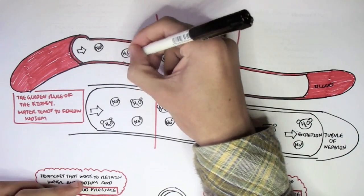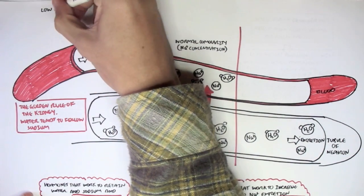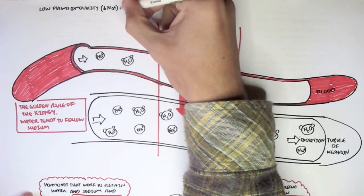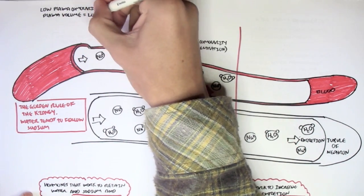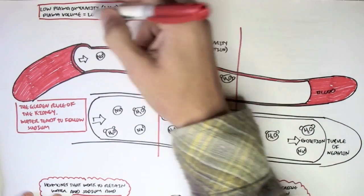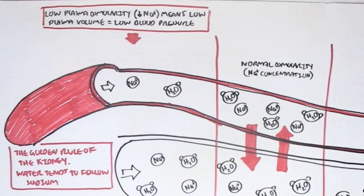However, what would happen when we have low osmolarity—low plasma osmolarity—when we have low sodium concentrations? This would mean that we also have low water concentrations, and therefore low plasma volume. Low plasma volume would imply that we have low blood pressure.